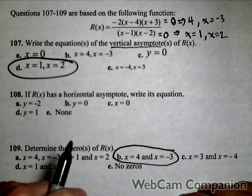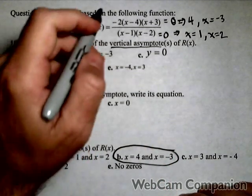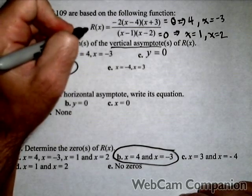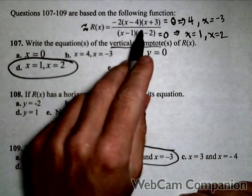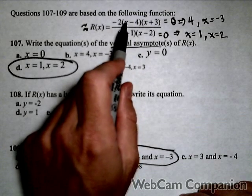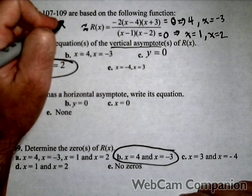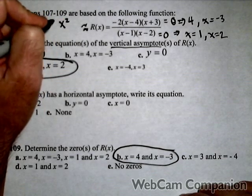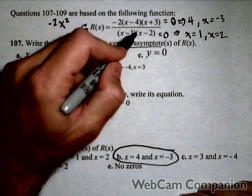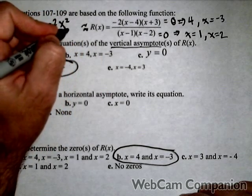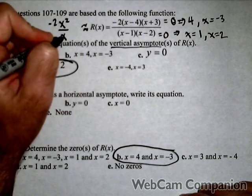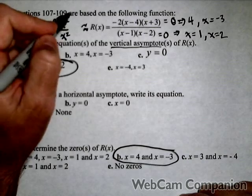And the last thing we have to find is the horizontal asymptote. Now, we don't need to multiply R of x completely out. We just need to see what degrees we have. So I can tell if I were to multiply at the top, I would have an x squared term, and it would have a negative two in front of it. If I multiply at the bottom, we only care about the leading term. I'd have a one x squared.